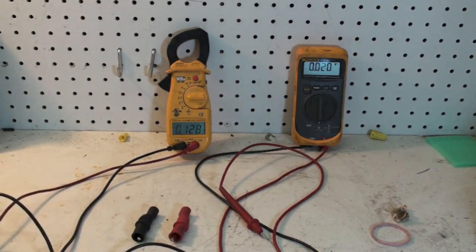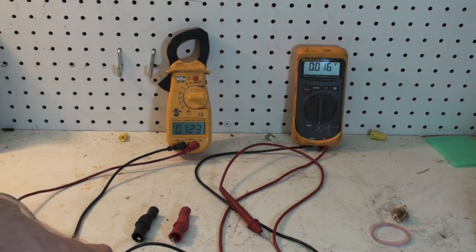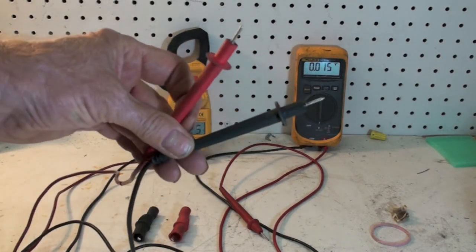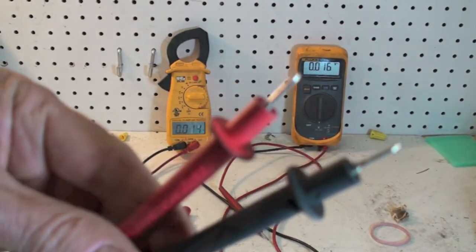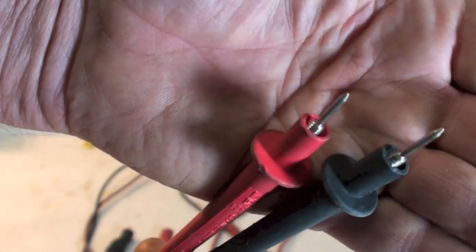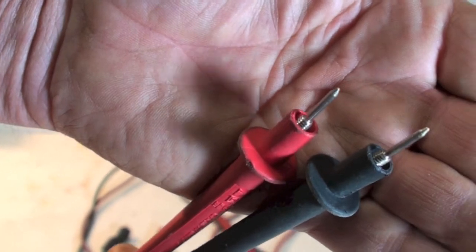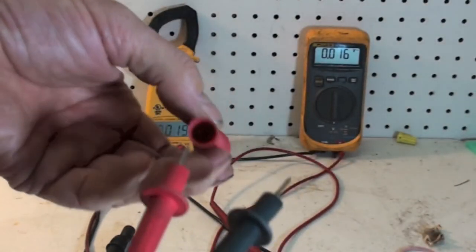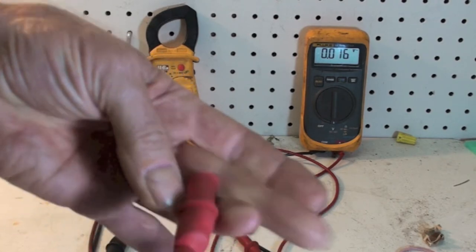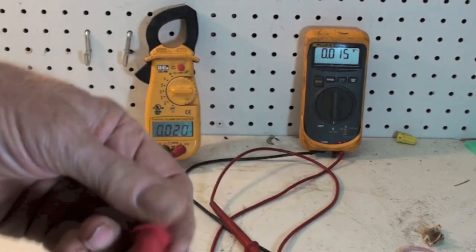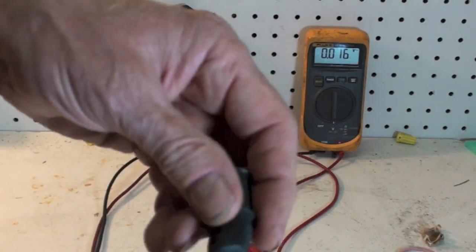However, the meter did come with something kind of cool. Here are the lead ends here, and if you look close you can see threaded parts there. That gives you a neat little thing you can do here with these.